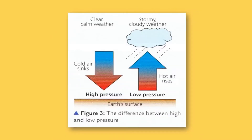This is the most important slide to understand how air is moved around the planet. If air is heated up, it rises, and as it gets cooler within the atmosphere, water vapour condenses and we get clouds and rain forming. We call this low pressure because air is rising — it's not pushing down on the Earth's surface.